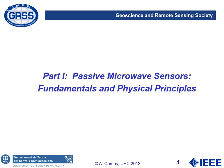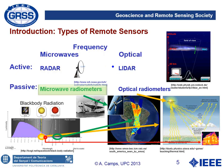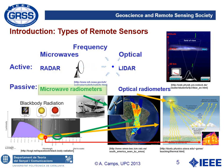Let's start with the first part of this lecture on fundamentals and physical principles of passive microwave sensors. In remote sensing, we can have active and passive systems using electromagnetic signals in the microwave or in the optical part of the spectrum. If we are working in the microwave part of the spectrum with an active system, this system is called a radar. If it is an optical system, it's called a lidar, which instead of an electromagnetic pulse, transmits a laser beam, a laser pulse.